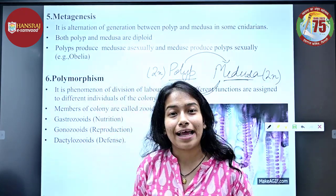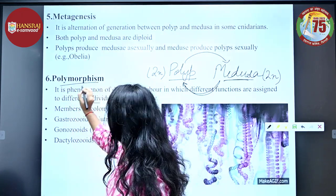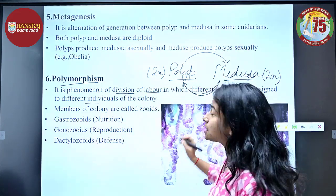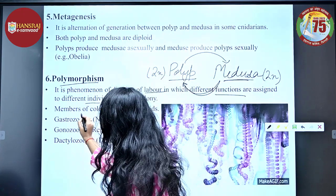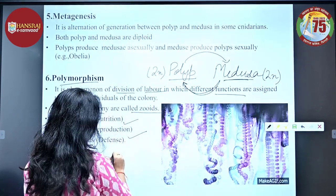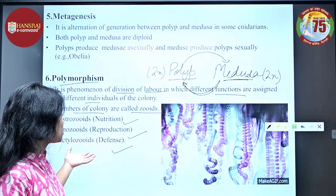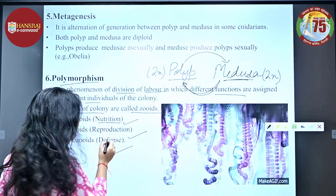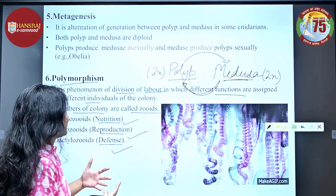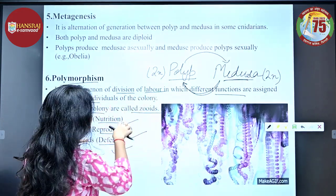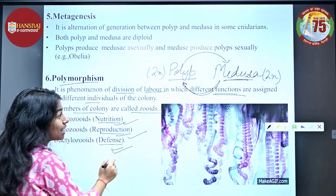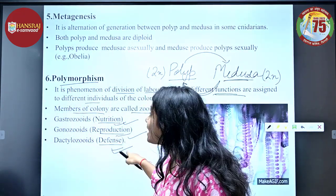Another very important characteristic of Phylum Cnidaria is polymorphism. Polymorphism is the phenomenon of division of labor in which different functions are assigned to different individuals of the colony. Members of the colony are called zooids. We have gastrozoids, whose function is nutrition; gonozooids, whose function is reproduction; and dactylozooids, whose function is protection.